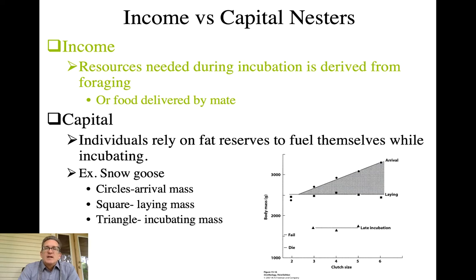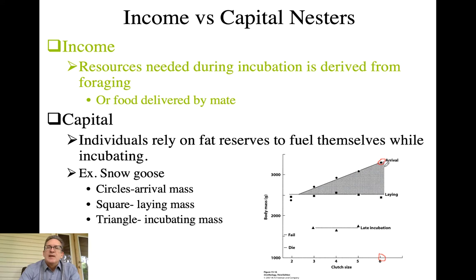Some birds are what we call capital nesters — they rely on fat reserves to keep them alive while incubating. The snow goose is an example. Individuals that arrive at a very high body mass can lay large clutches — say six eggs — but producing that many eggs reduces their weight significantly by the laying date. A bird arriving at a slightly smaller mass can only produce five eggs to stay above the mass needed to sustain incubation.